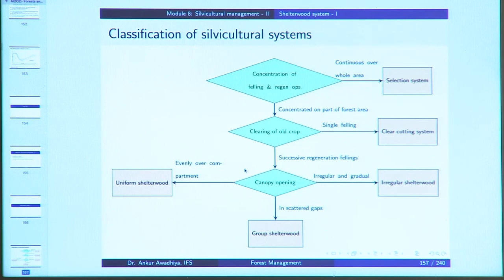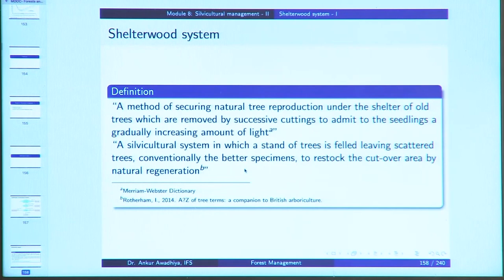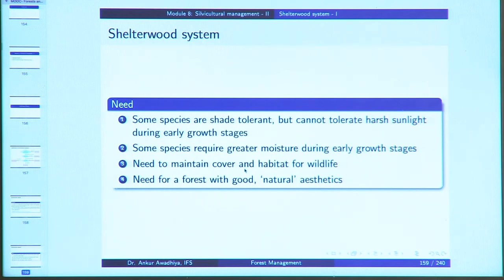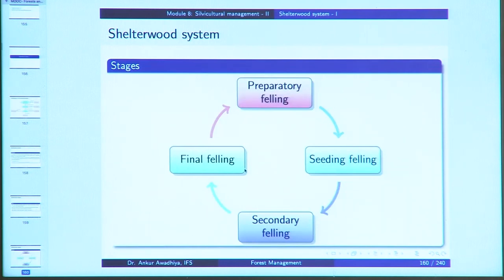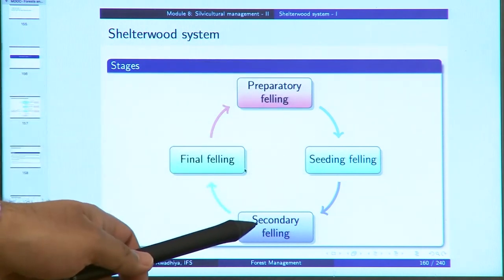In the shelter wood system, clearing is done in successive regeneration fellings. The canopy can be opened evenly over the compartment (uniform shelter wood), in scattered gaps (group shelter wood), or in an irregular and gradual manner (irregular shelter wood). It is a method of securing natural tree reproduction under the shelter of old trees, which are removed by successive cuttings to admit a gradually increasing amount of light. It is needed because some species are shade-tolerant but cannot tolerate harsh sunlight during early growth stages, or require greater moisture, or where cover and habitat for wildlife must be maintained.